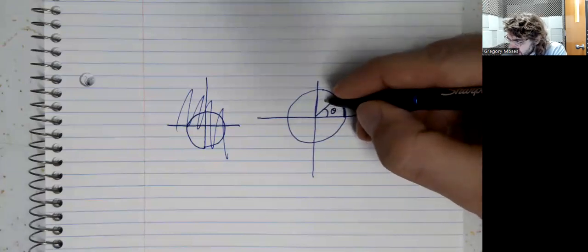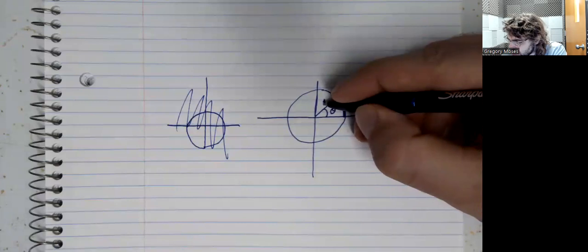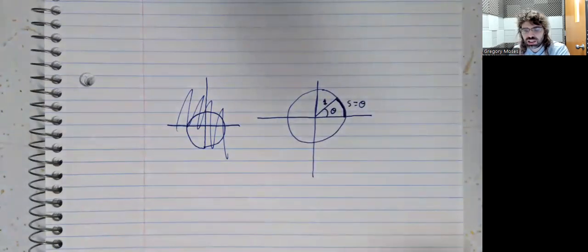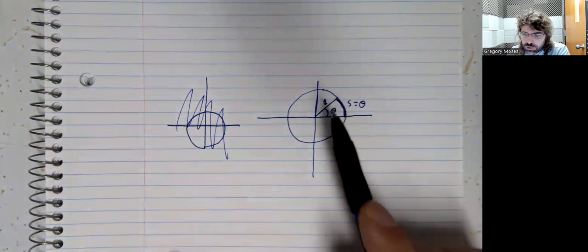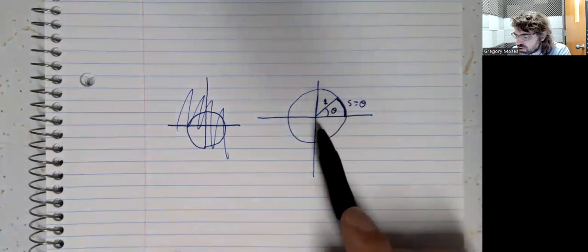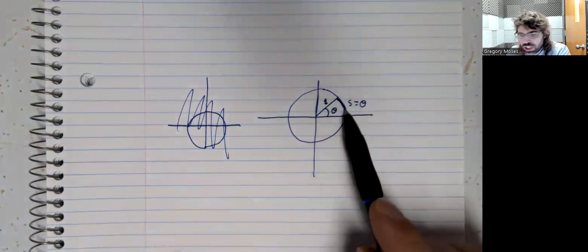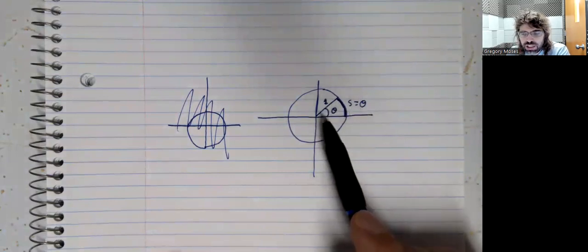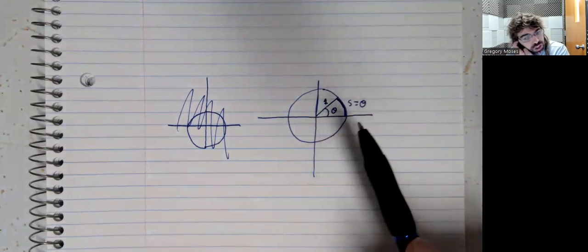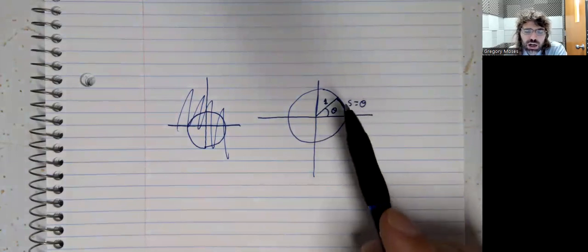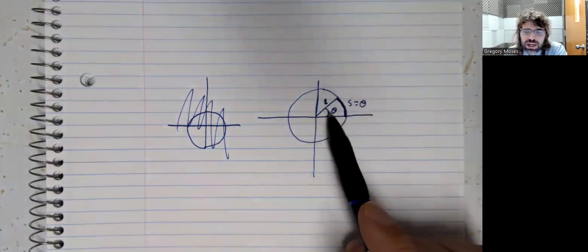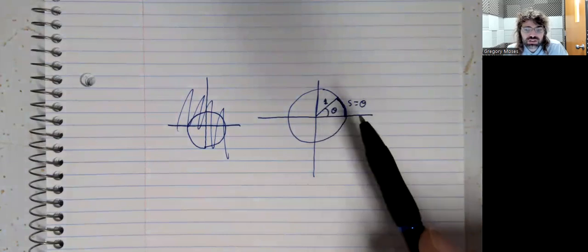And again, this is a unit circle, so the radius is one. So in this very special case, the arc-length and the radius are—I'm sorry, not the radius—the arc-length and the angle are the same.